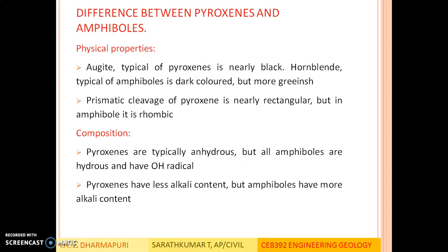Now we will see the main differences between pyroxene and amphiboles. In physical properties: augite, typical of pyroxene, is nearly black; hornblende, typical of amphiboles, is dark colored but more greenish. The prismatic cleavage of pyroxene is nearly rectangular, but in amphibole it is rhombic.